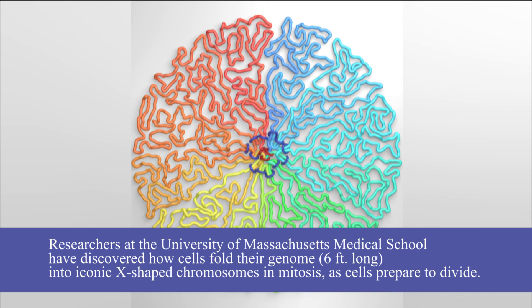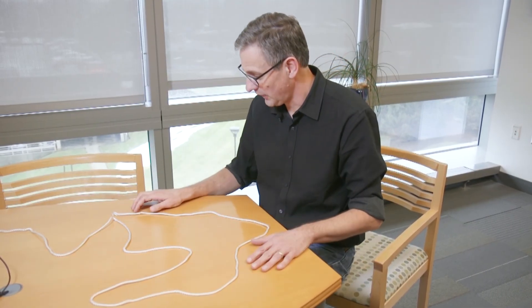I imagine this could be a chromosome. It's a decondensed structure, but in metaphase, this structure has to become much smaller — it has to be about this big. So how do cells do this?